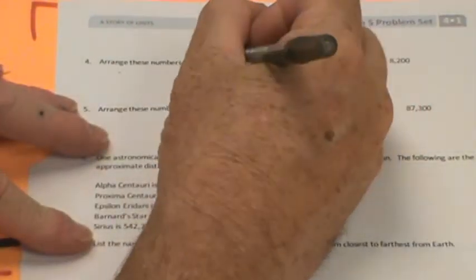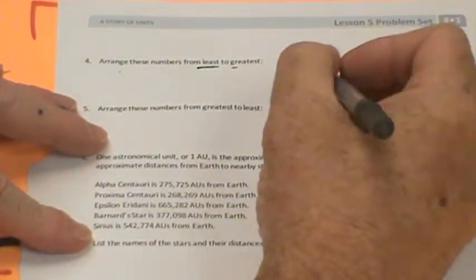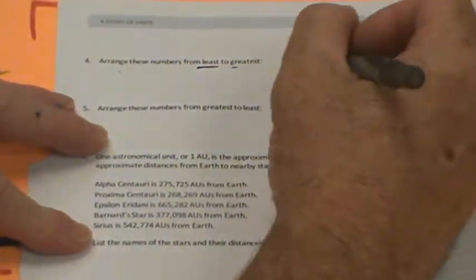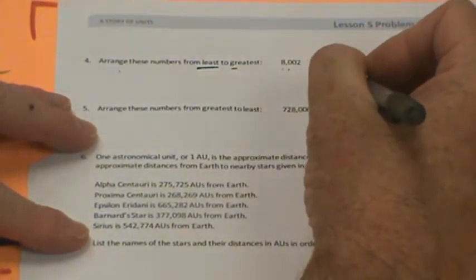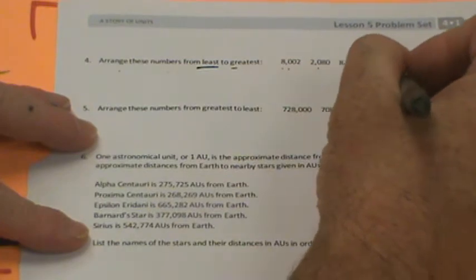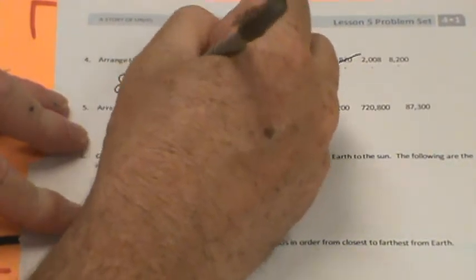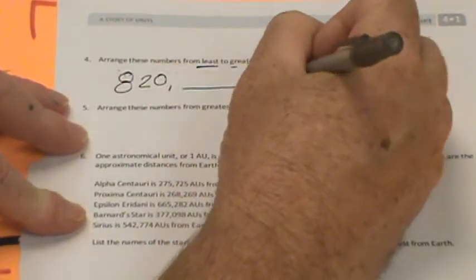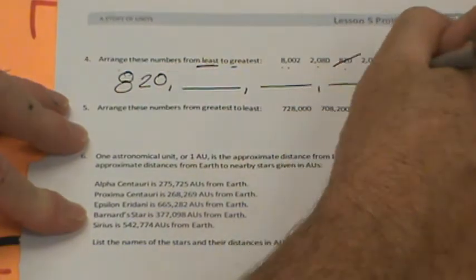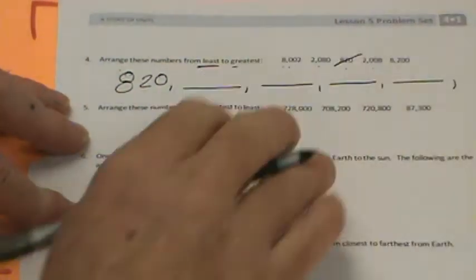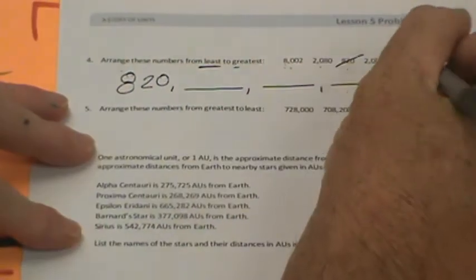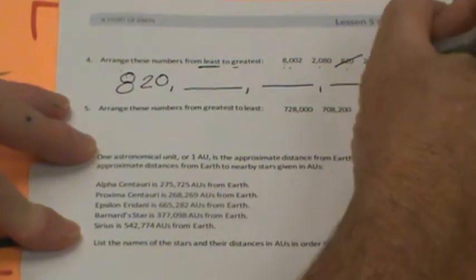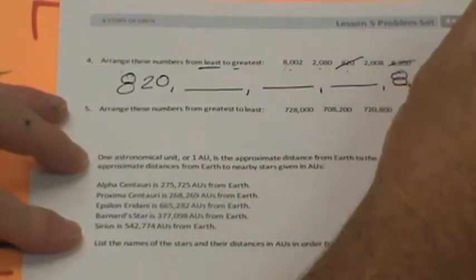Arrange these numbers from least, from the smallest to the greatest. So you're going to try to arrange these from the smallest to the greatest. And I'm going to get you started. I can clearly see this is 8,002, 2,080, 820, 2,008, and 8,200. So I know 820 is the least. It's up to you to figure out the next 4. And you know what I'm going to do? I'm going to put the highest one in here just to help you out. I can see easily that it's 8,200. So you figure out the rest.